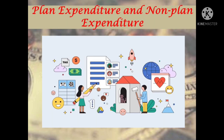Plan expenditure and non-plan expenditure: Plan expenditure refers to expenditure incurred by the government to fulfill its planned development programs. This includes both consumption and investment expenditure by the government or planning commission of a country — for example, expenditure on agriculture, industry, public utilities, health, and education. Non-plan expenditure refers to all government expenditure beyond the scope of its planned development programs. For instance, no government can escape from its basic function of protecting the lives and properties of the people, for which government has to spend on police, judiciary, military, etc.